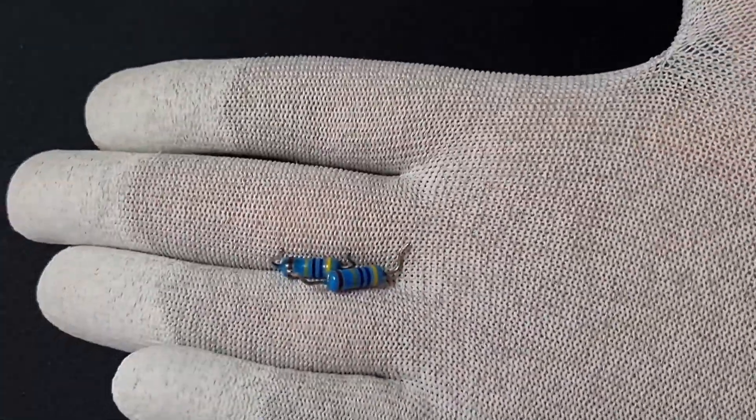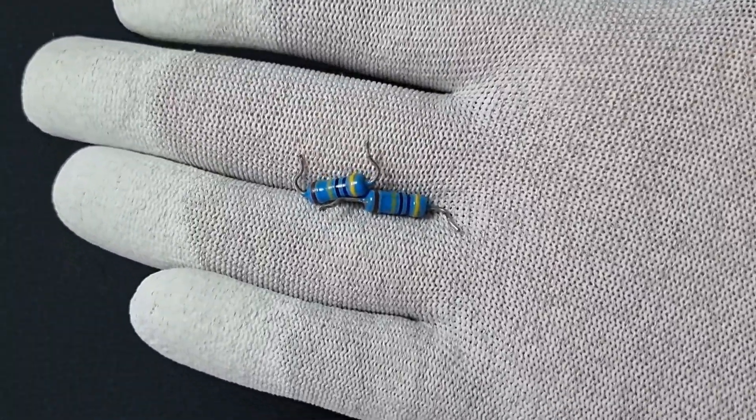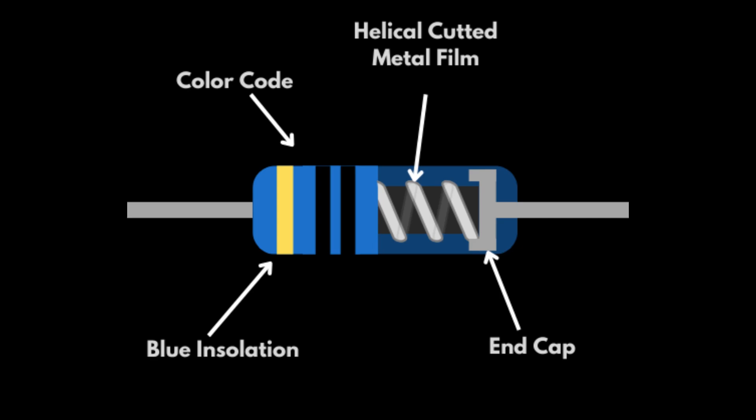The third type is a metal film resistor. Although it's a bit more expensive, it's more reliable. This resistor is made by depositing a thin layer of metal onto a ceramic core. The resistance is controlled by the thickness of the metal layer.